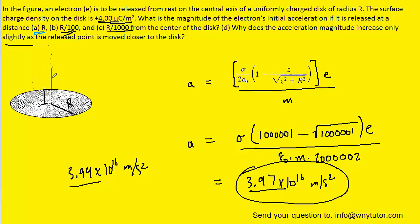Now move the electron much closer to the center of the disk. The positive charges on the periphery still attract the electron, but the charge on one side pulls the electron one way while the charge on the opposite side pulls in the opposite direction — those forces cancel each other out. The same cancellation happens across all sides. So the force contributions from the outer charges become increasingly diminished as the electron moves toward the center, and with those forces canceling out, the acceleration increase is diminished.